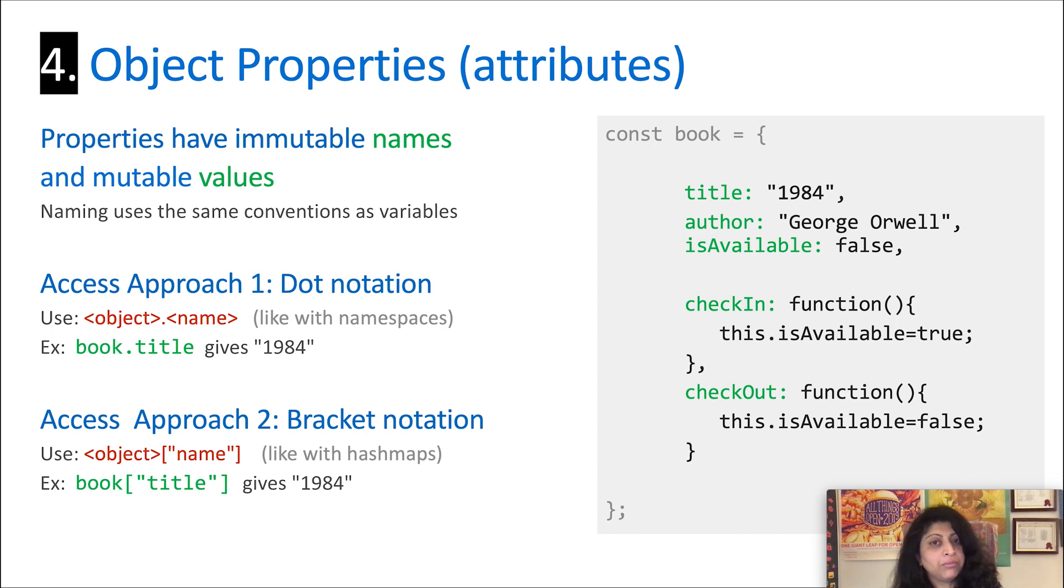To access a property, approach number one is to use what's called the dot notation. If you're familiar with namespaces, this format is actually likely familiar to you. It's object dot property name. So in this particular case, if I say book dot title, I'm effectively going to get back the value associated with that property, which is 1984. I can also say book dot title equals and give it a new value if I want to, which will effectively change the title of that book.